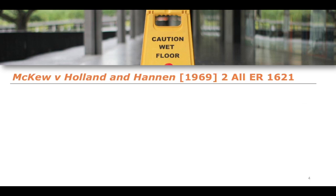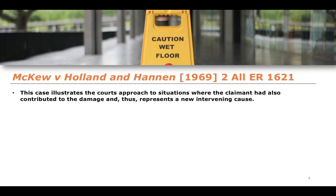Let's think about the case of McCoo v Holland and Hannan from 1969. This case illustrates the court's approach to the situation where the claimant had contributed to the damage and thus represented a new intervening cause. We have a defendant who breached their duty of care through negligence, and that negligence causes some kind of damage to a claimant. But at the same time, or even before that, the claimant also does something which exacerbates the situation and contributes to the damage.